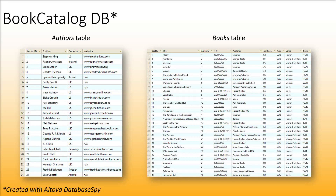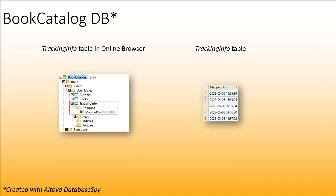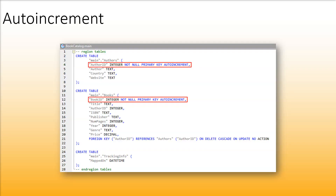Our target component is a database with three tables. The Authors and Books tables have a foreign key relationship. The third table has only one column that will contain information about when the mapping was last executed. It is important to note that there is auto-increment set for the primary keys in the Authors and Books tables, which means that new IDs will be assigned automatically by the database.